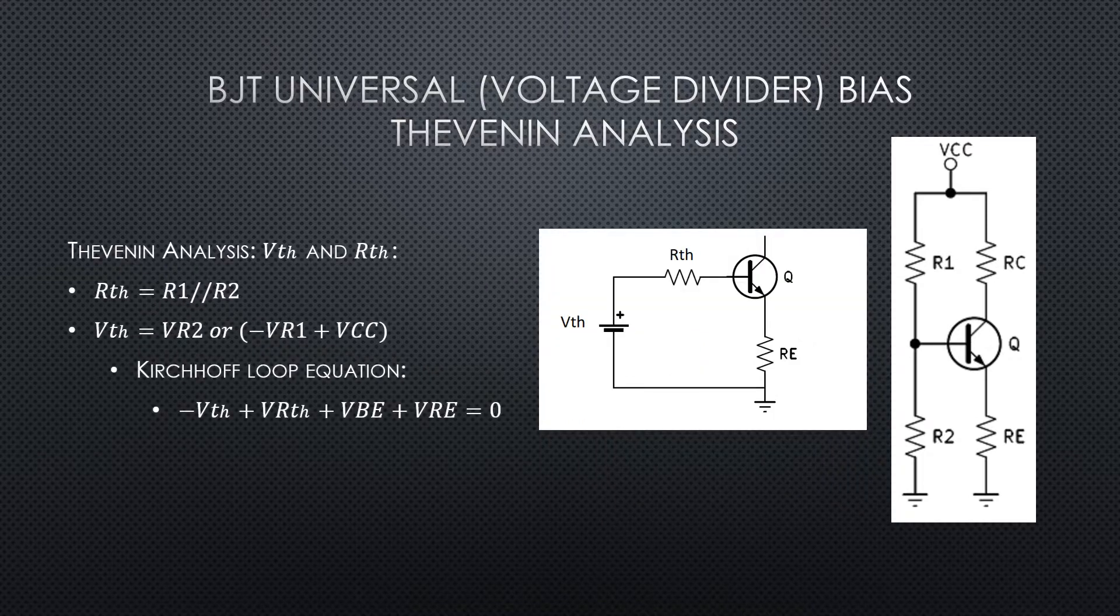So now we've found all the components. We've found V Thevenin and R Thevenin. We can put our original load back into the circuit, which is our transistor base to emitter and our RE.